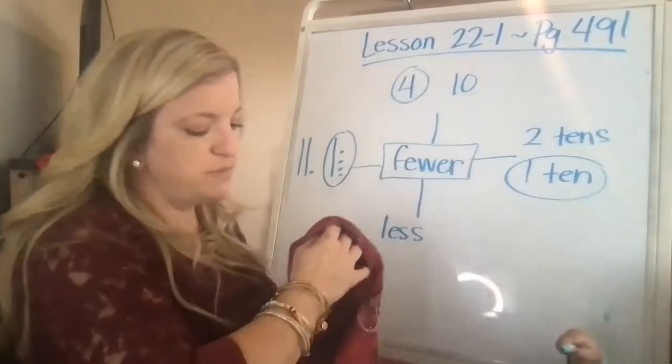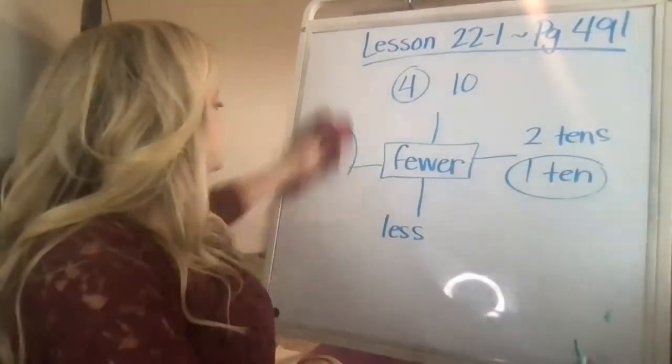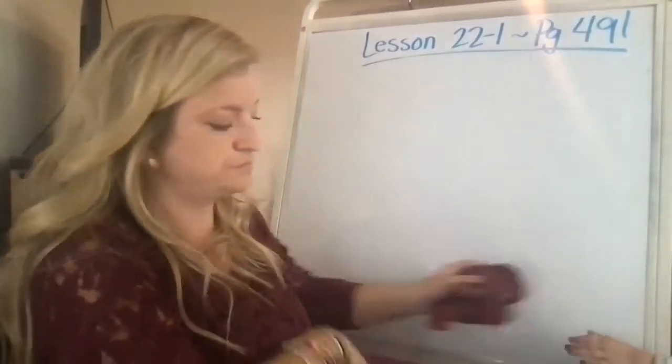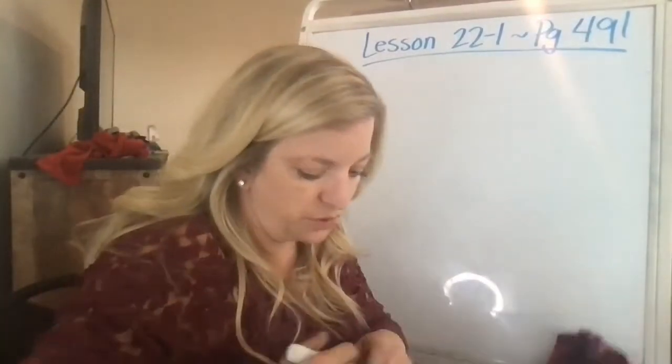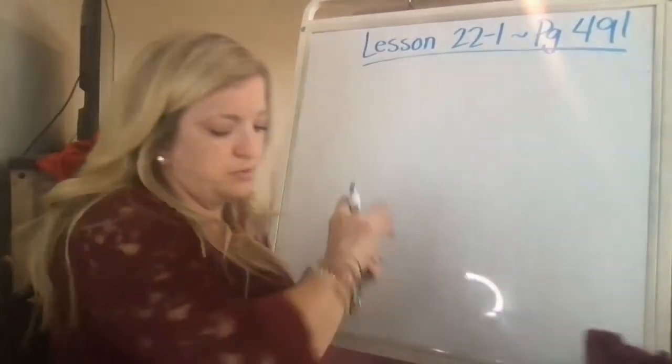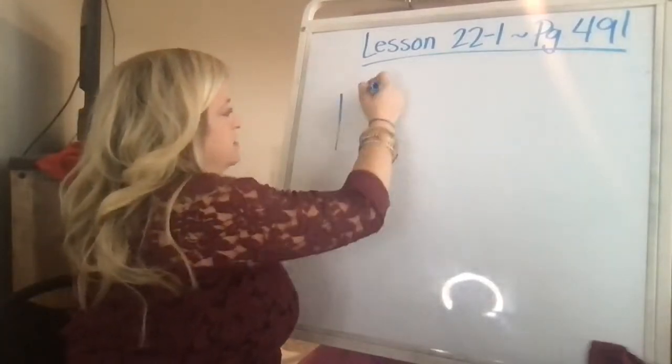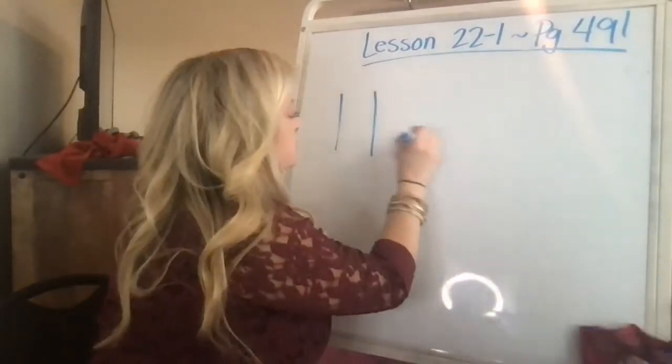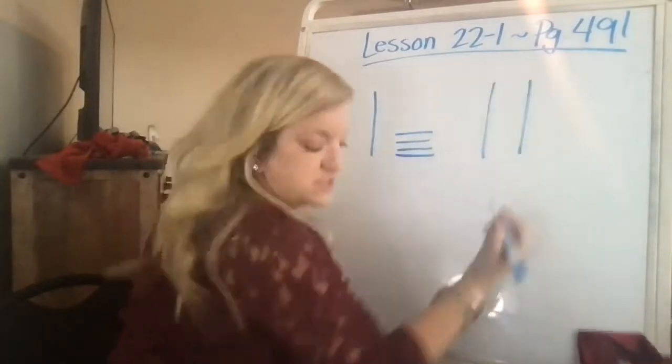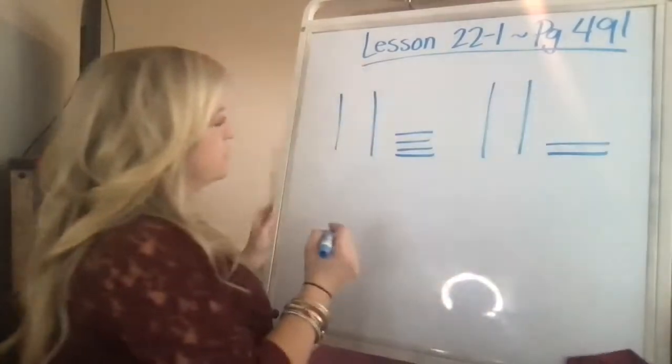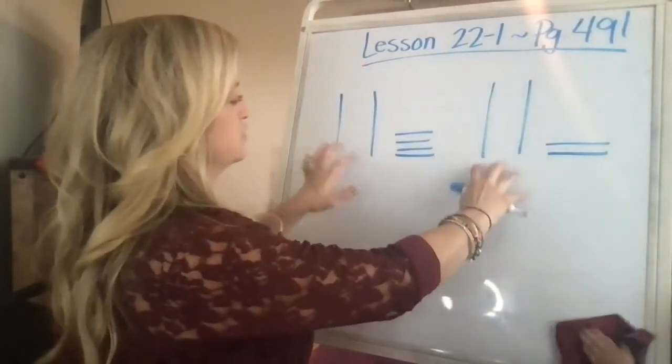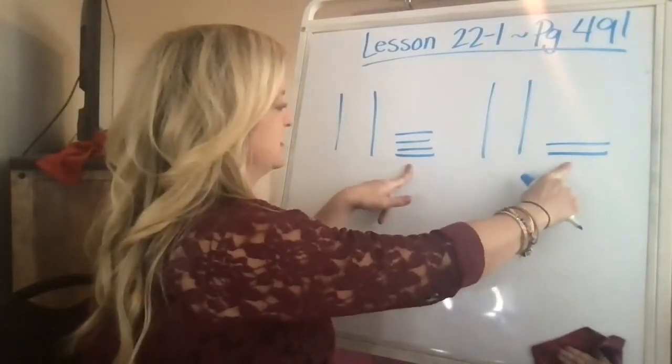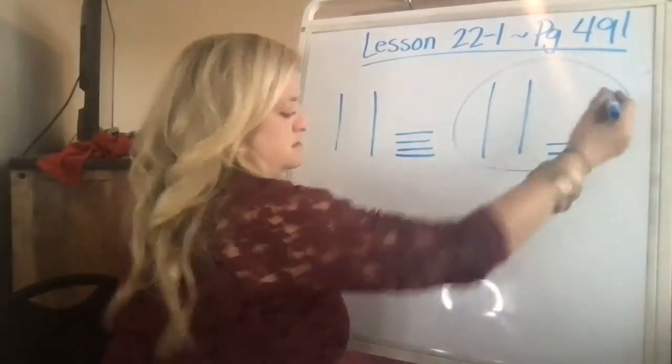Now down at the bottom, it says circle the group with fewer books. So you're just going to circle the one that is fewer. So it has, like this one is a whole stack. This one is a whole stack. And then there's four, one, two, three, four. And then there's a whole stack and a whole stack and one, two. So these are the same. So those are the same. Then you're going to look to these stacks. Which one has less? The one on the right does.